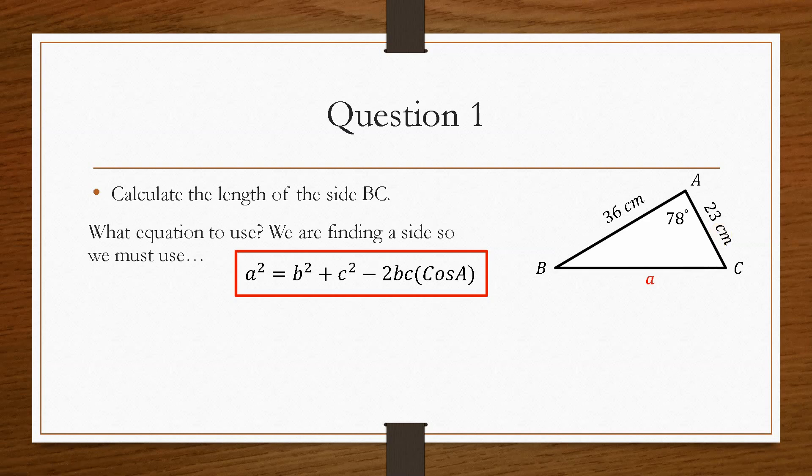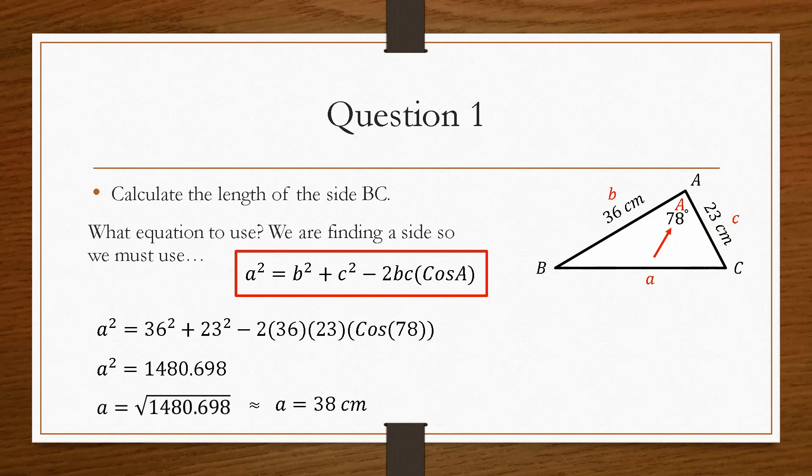So we need to start to label this. So we'll call this small a, because this is the side that we want. Now, remembering that the reciprocal, the capital A, is the angle directly across from that side. So if this is small a, this angle in here must be capital A. Now, that is the key constraint when solving this problem. B and C are interchangeable. It doesn't matter which one is which. So we'll call this B, and we'll call this C. So then it is literally a case of, pop all these values into the equation. We'll simplify it. We'll square root it. And that will give us our value of A to round up to 38 centimetres.